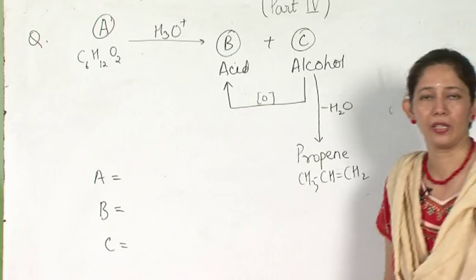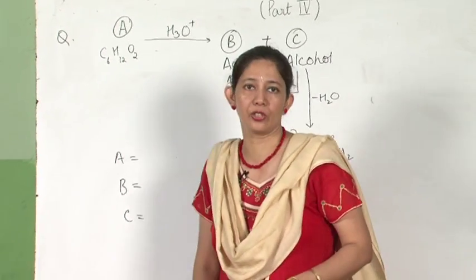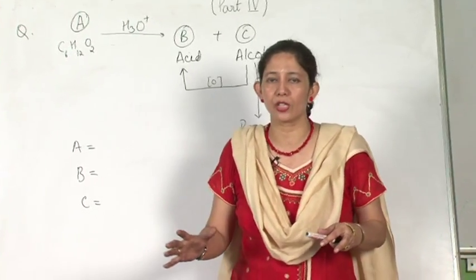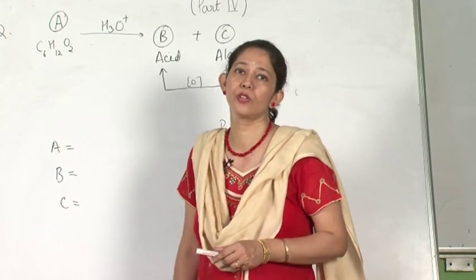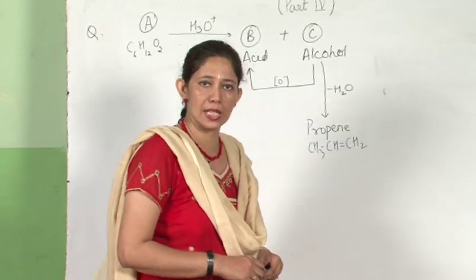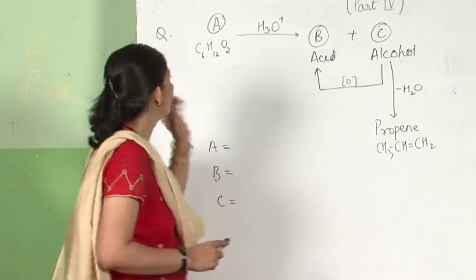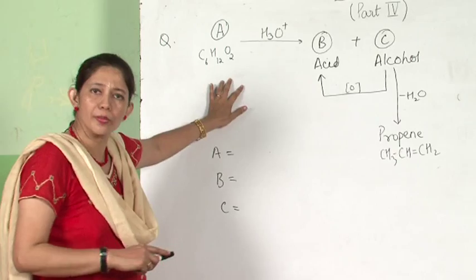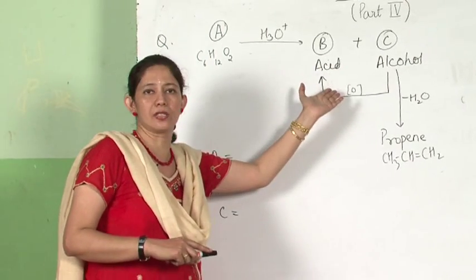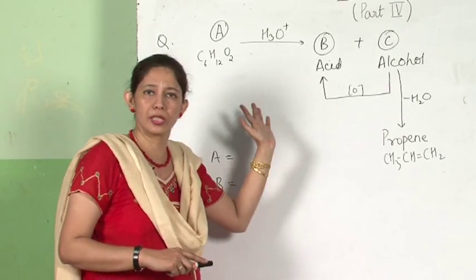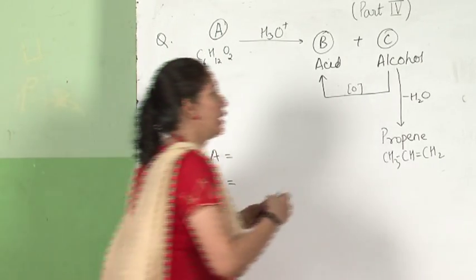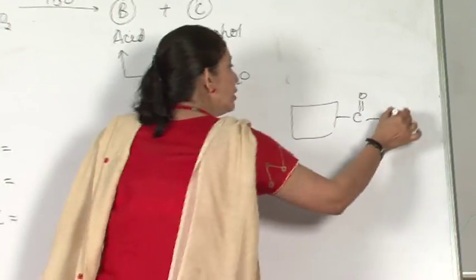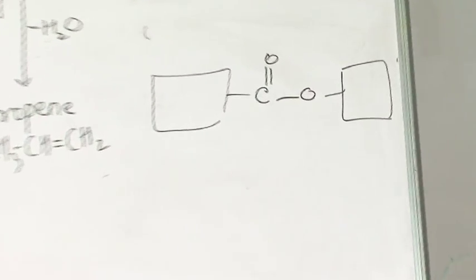Now what can compound A be? Compound A has 2 oxygen atoms. Among the functional groups in your syllabus, there are only 2 organic compounds containing 2 oxygen atoms: carboxylic acid and ester. This compound cannot be a carboxylic acid because it is itself giving an acid on hydrolysis. Therefore, compound A must be an ester. We know ester has this functional group, and we need to determine how the 6 carbon atoms are distributed on each side.